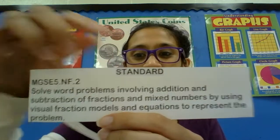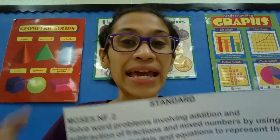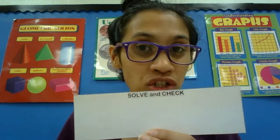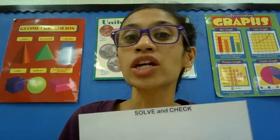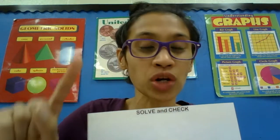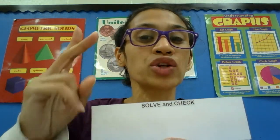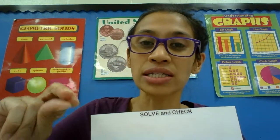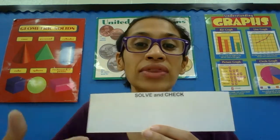Always show your work in the solve and check. When you solve and check, let's go back to that standard — it says we are going to use visual fraction models and equations. So for your solve and check, I want you to draw the picture of the fraction and then write the equation. Two things: draw a picture — draw your model, that visual representation — and write your equation with the fractions, the operation symbol, the equal symbol, and the answer. That's the way that you check it by doing both ways.